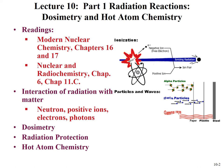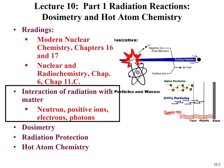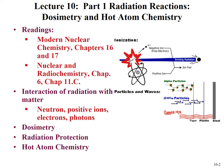The first part of this lecture will cover interactions of radiation with matter. We're going to explore the interactions of neutrons, positive ions, electrons, and photons with matter. Lecture part two will cover dosimetry, radiation protection, and hot atom chemistry. The figure here shows an example where an ionizing particle comes in and creates a free electron and a positive ion.